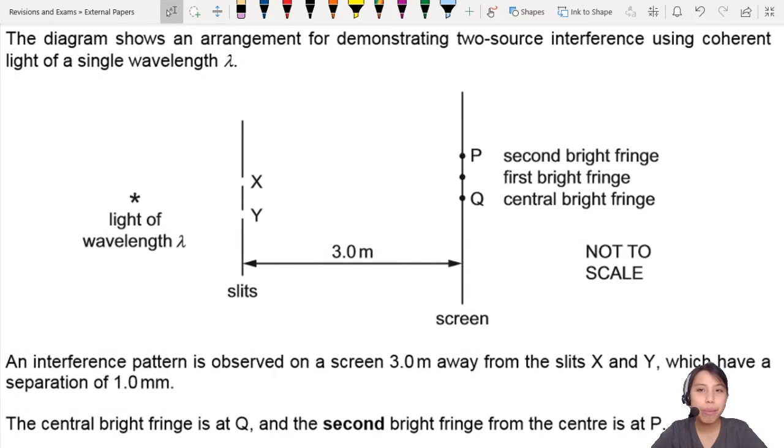Here's a double slit experiment studying an interference pattern. You have light of wavelength—don't know what wavelength—coming in, and you have bright fringes all marked out nicely for you here on the right side. The interference pattern is observed three meters away; this is what we call D, the distance between the slit and the screen.